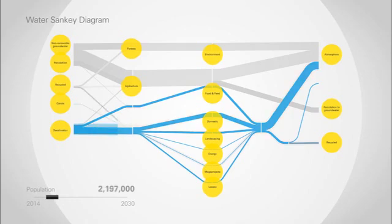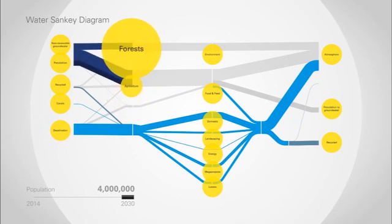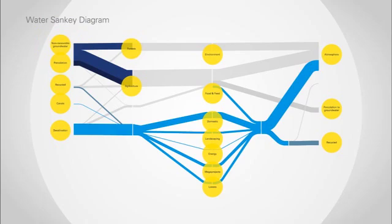Growing population and an increase in economic development will require more desalination. Agriculture and forestry continue to use non-renewable groundwater resources. However, they increasingly use recycled water.